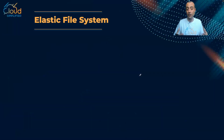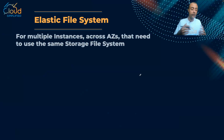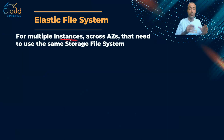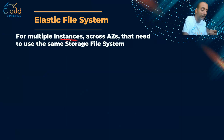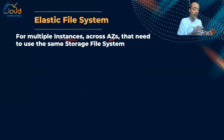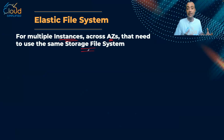Let's look at the characteristics of EFS. With EFS, I can have multiple EC2 instances, and these EC2 instances are across multiple availability zones but in the same region. They can all access the same shared storage file system. Let's see how the architecture looks.